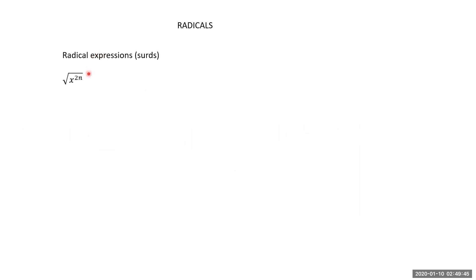For example, the square root of x to the power 2n equals x to the power n — this is a surd. Similarly, the cube root of 8 gives 2 as the answer, and the square root of 36 gives 6. These are simplified radical expressions.